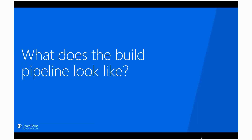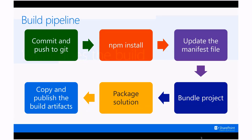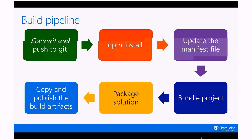Let's dive into the build pipeline. When we commit, the build pipeline starts. The first action is gathering all the files and running an npm install. Once dependencies are retrieved, it updates the manifest file — setting the right CDN configured for that branch. Then you do a bundle and package the solution. These are the same three steps we just demoed in code. Then we copy and publish the build artifacts. Once that's done, a release pipeline can start — you can configure nightly releases or trigger on successful builds.